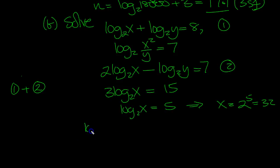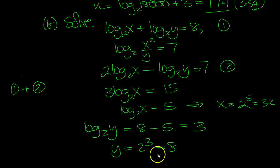So log 2y is equal to 8 minus the log 2 of 2 to the 5, which is 5. Log 2x is 5, so 8 minus 5 is 3. So log 2 of y equals 3, so y is equal to 2 cubed. Hit that in the air, y is equal to 8.